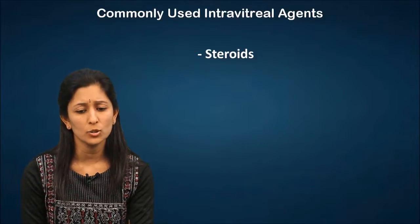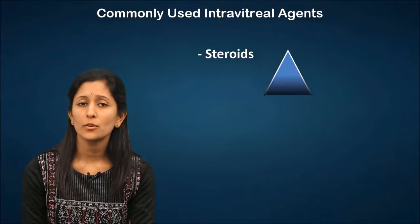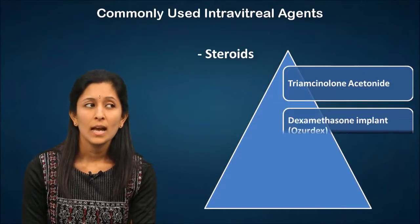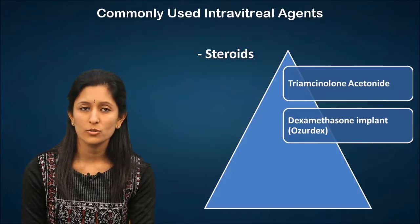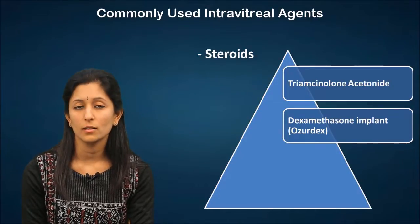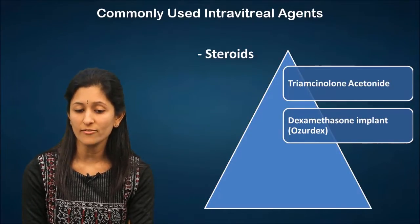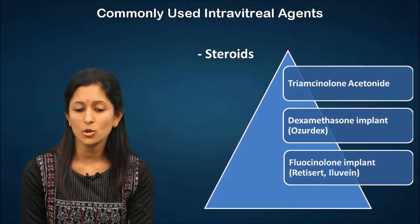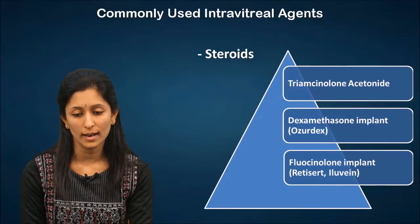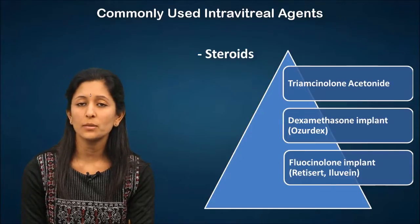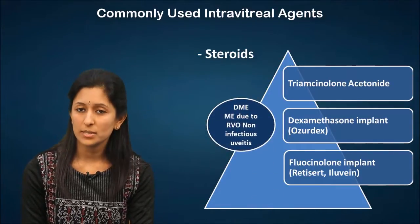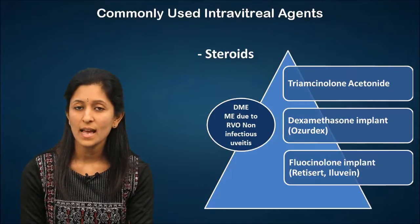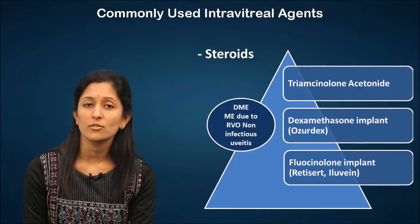The other group of agents commonly used is steroids. Here we have Triamcinolone Acetonide, which is again off-label. The dexamethasone implant, which is known as Ozurdex, has a longer half-life. And the fluocinolone implant, available as Retisert or Iluvien, has a further longer half-life. These have been approved for use in diabetic macular edema, macular edema due to retinal vascular occlusions, and edema from non-infectious uveitis.